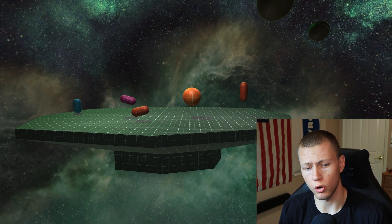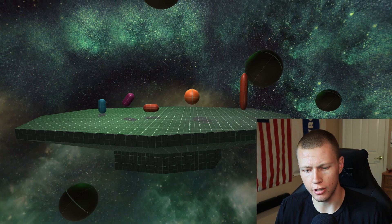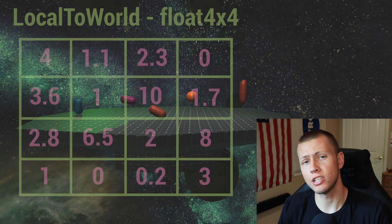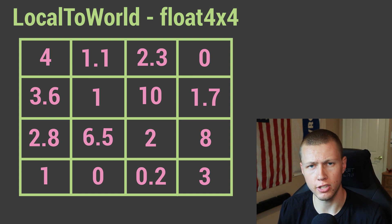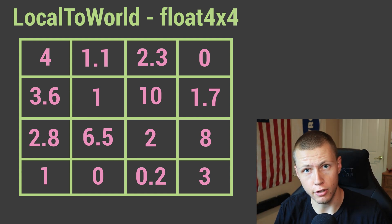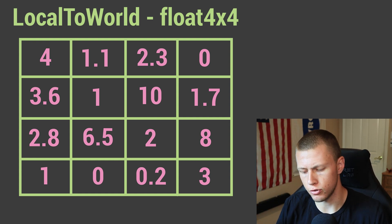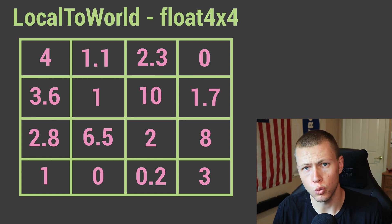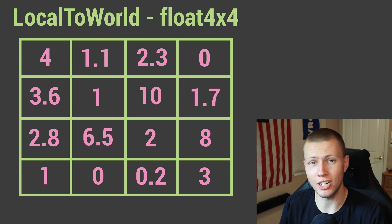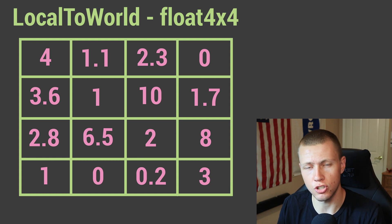If we do want an entity to exist somewhere in our world, the end-all be-all component for where it physically exists is called the LocalToWorld component. It is a float4x4 matrix — 16 float values total — and from that matrix we can calculate the position, rotation, and scale of the entity.